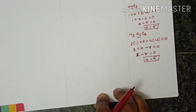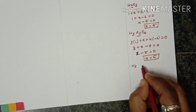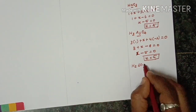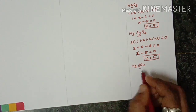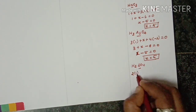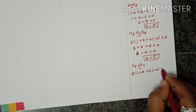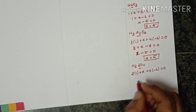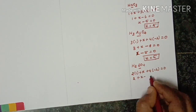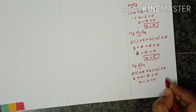Next, for sulfuric acid H2SO4, finding sulfur's oxidation number: 2(1) plus x plus 4(-2) equals 0. So 2 plus x minus 8 equals 0, giving x minus 6 equals 0. Therefore, x equals plus 6.